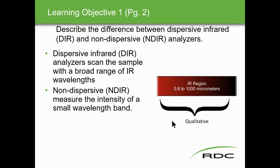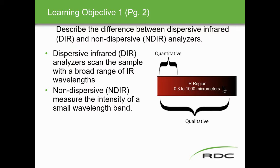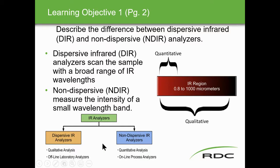When we do this, dispersive infrared does qualitative analysis, and non-dispersive usually does quantitative — how much of that substance. Once we find out what's in it, we find out how much. If we're going to measure CO2 or CO, we pick the infrared analyzer with the proper wavelength of the IR spectrum. Dispersive IR analyzers are offline laboratory analyzers doing qualitative analysis; non-dispersive IR analyzers are quantitative and online process analyzers.